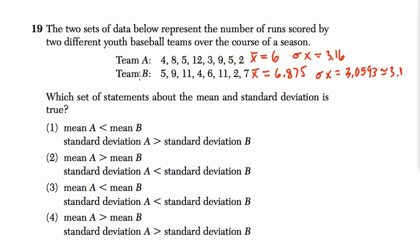So I notice that the mean is greater for team B. So choices 2 and 4 can't be correct. I know the standard deviation is higher for team A. So it has to be choice 1. Standard deviation of A is larger than B. All right, I hope this helps.